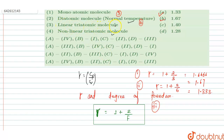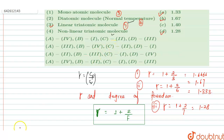For the linear triatomic molecule, the degree of freedom is seven. So gamma is equal to one plus two by seven, which is equal to approximately 1.28. The answer for the linear triatomic molecule corresponds to option D, and option C corresponds to the monoatomic case.